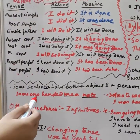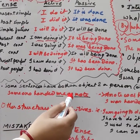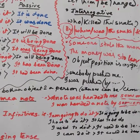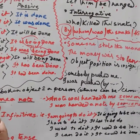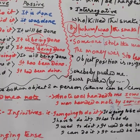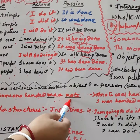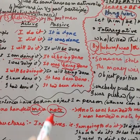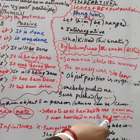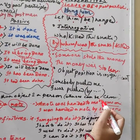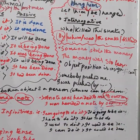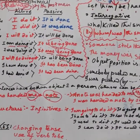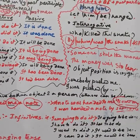Another case: some sentences have both a direct and an indirect object — two objects. For example, 'Someone handed me a note.' Here the objects are 'me' and 'note.' You can write it two ways: 'A note was handed to me by someone,' or 'I was handed a note by someone.'